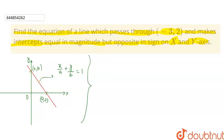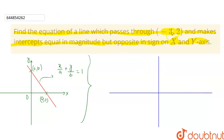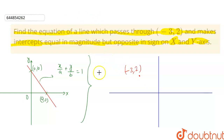Now moving to the question, we will draw the coordinate axis. We have a line which passes through a point where the x-coordinate is negative and the y-coordinate is positive, which means this point belongs to the second quadrant — somewhere here at minus 3 comma 2.